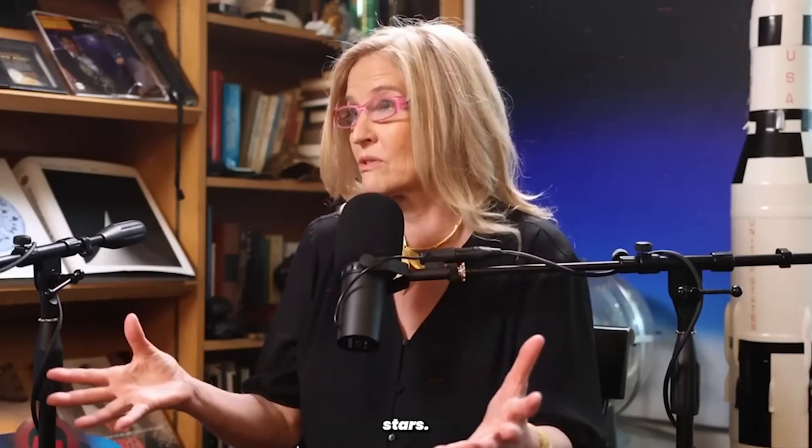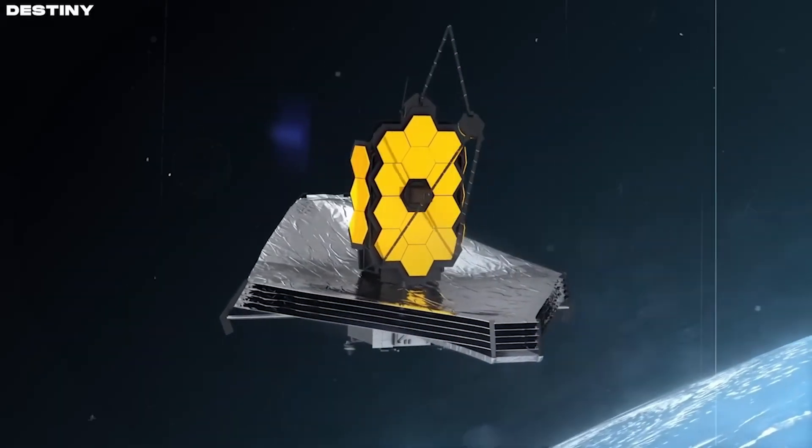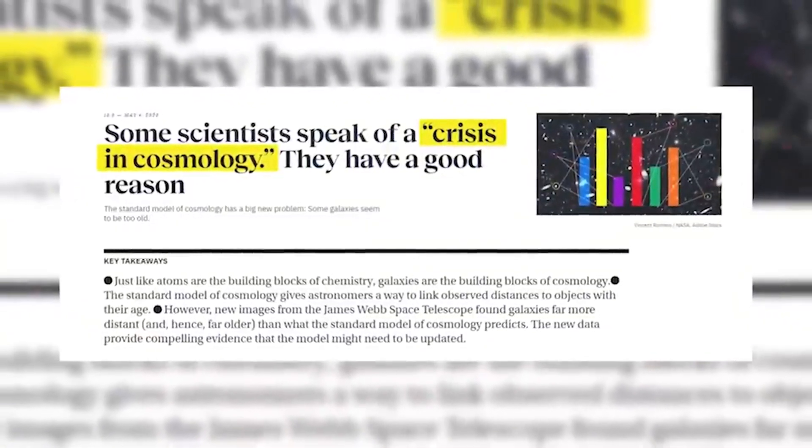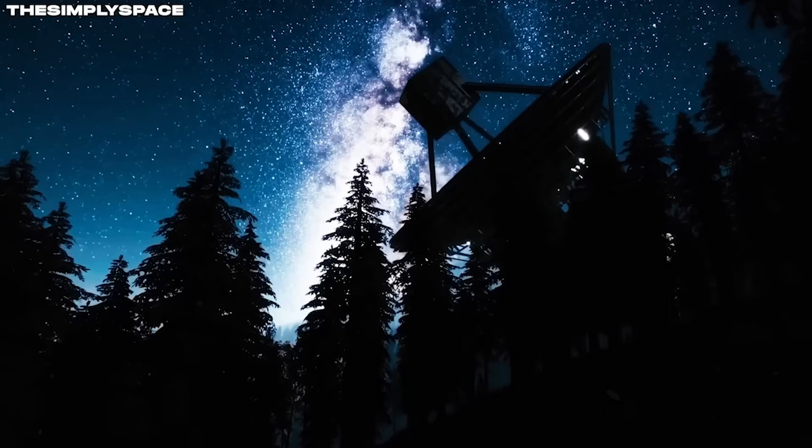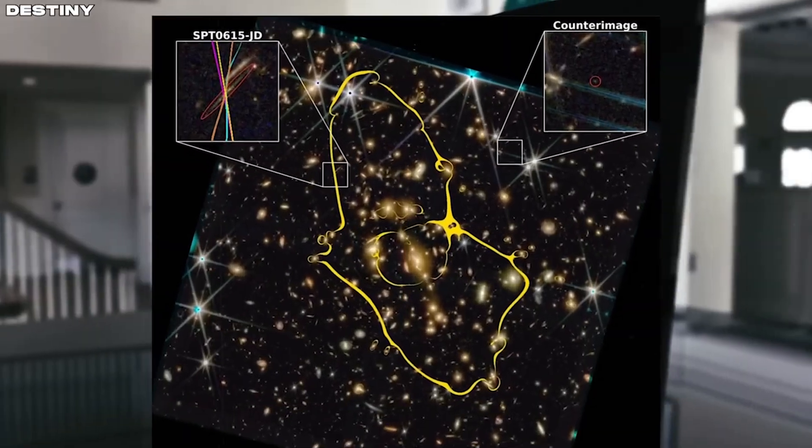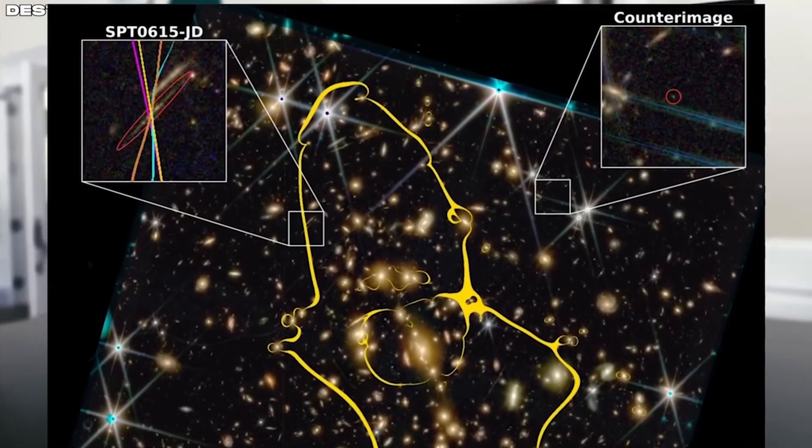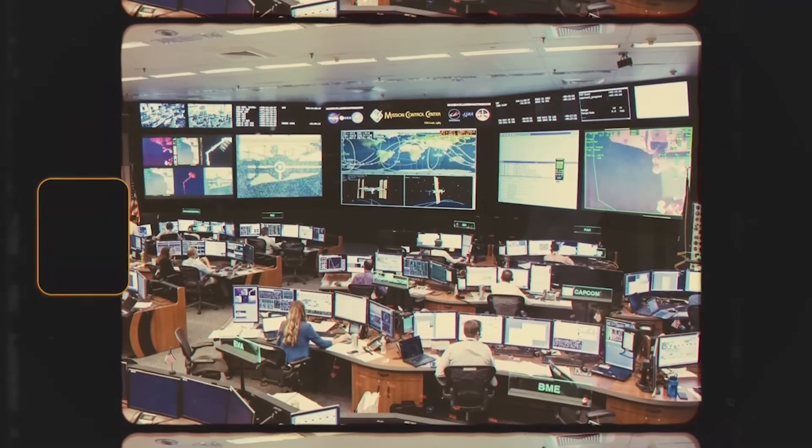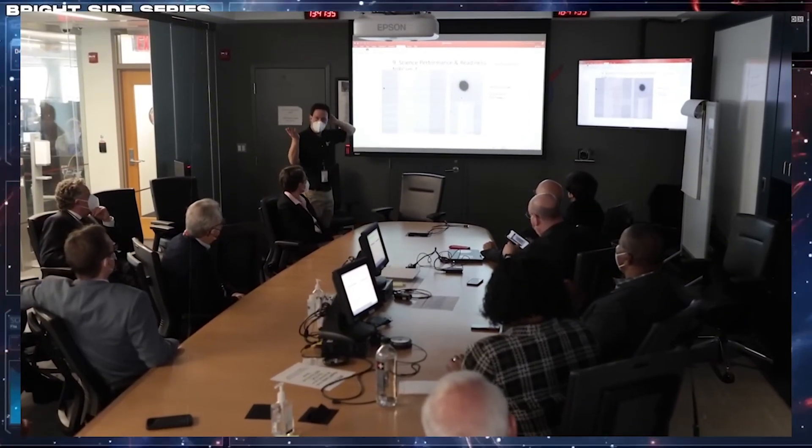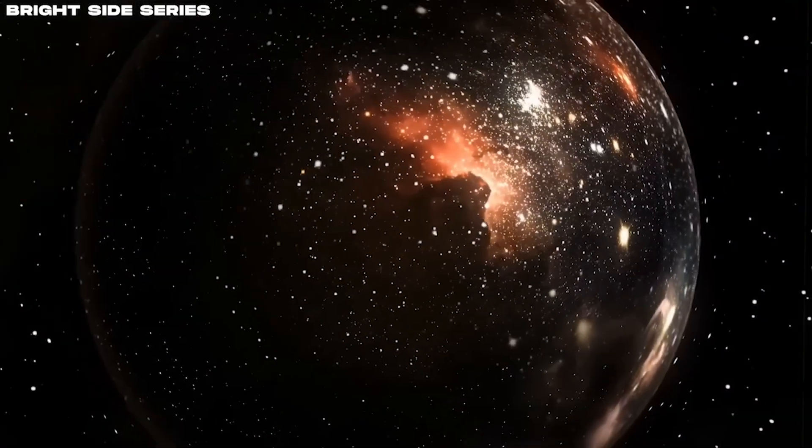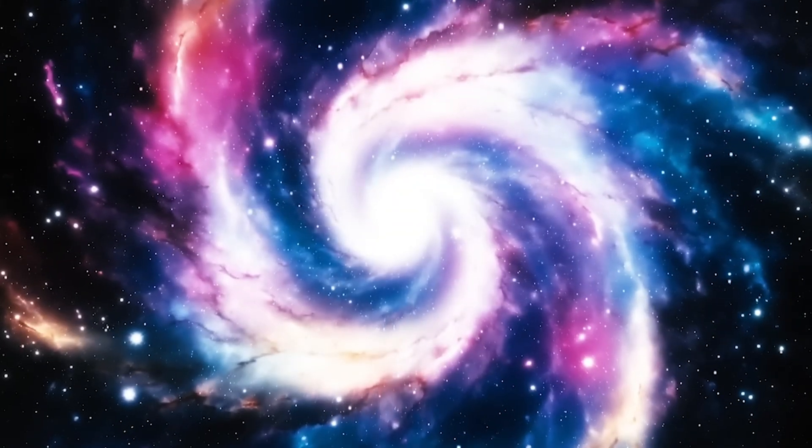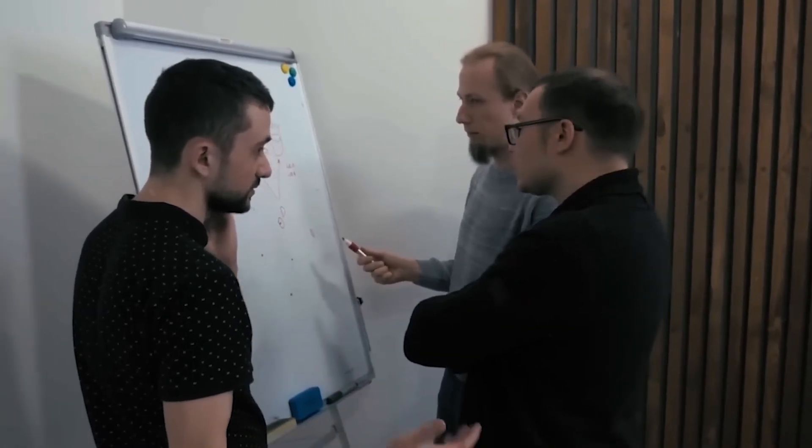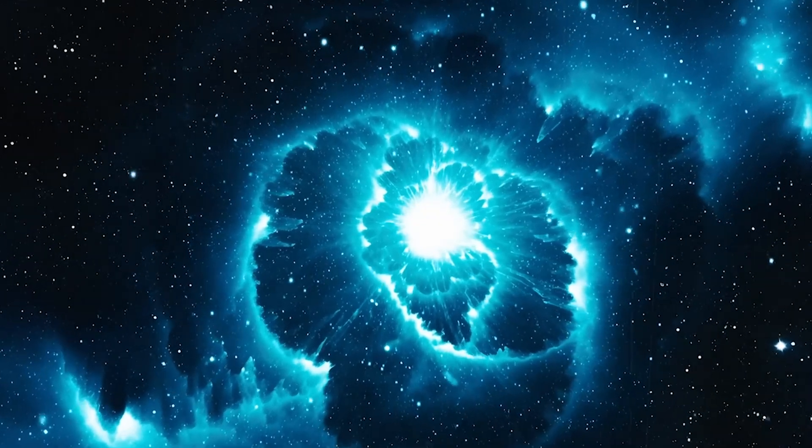The James Webb Space Telescope's recent discoveries have sparked a crisis in modern science, challenging many of the long-held assumptions about the universe. The images and data it has provided show phenomena that seem to contradict what we once believed. For much of the 20th century, the cosmological principle, which holds that the universe is the same in all directions, was central to our understanding of cosmic evolution and foundational for the Big Bang Theory.